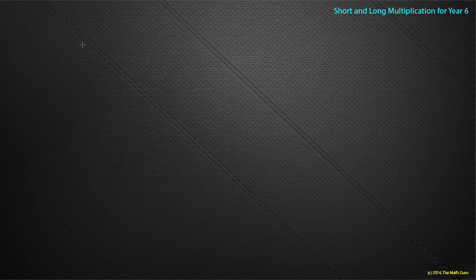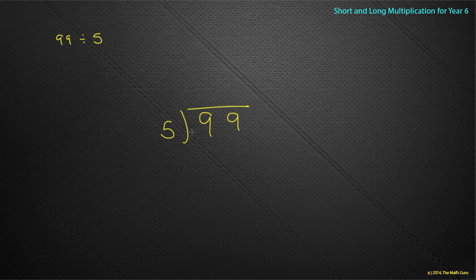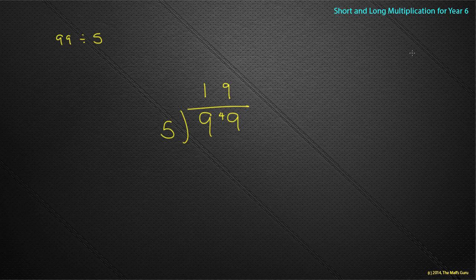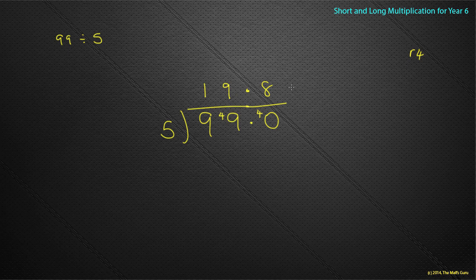Let's do one more example: 99 divided by 5. How many 5s go into 9? One, remainder 4 — put my little 4 here. How many 5s go into 49? Nine, remainder 4. Now instead of writing remainder 4, I put a decimal point and a 0, carry the 4. Making sure I write the decimal point up in the answer too. 5s into 40 go 8 times. No more remainder, so the answer is 19.8.